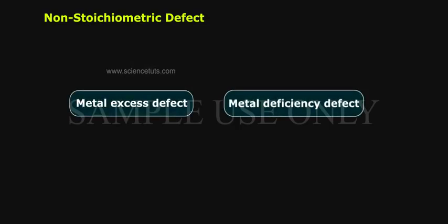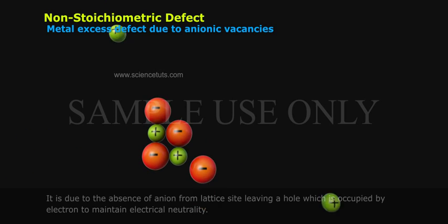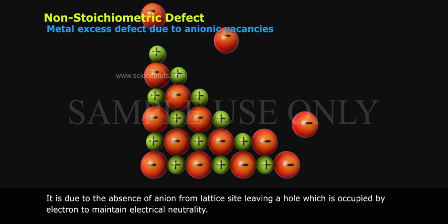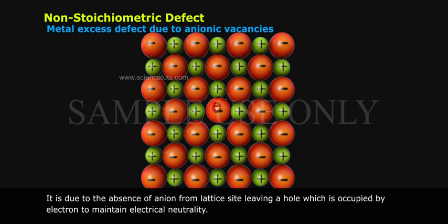Non-stoichiometric defects are of two types: metal excess defect and metal deficiency defect. Metal excess defect due to an ionic vacancy is caused by the absence of an anion from its lattice site, leaving a hole which is occupied by an electron to maintain electrical neutrality.